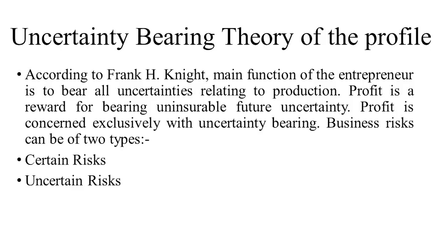The next theory is the Uncertainty Bearing Theory of Profit, propounded by Frank H. Knight. According to Knight, the main function of an entrepreneur is to bear all uncertainties related to production. Profit is a reward for bearing uninsurable future uncertainties. Business risk can be of two types: certain risk and uncertain risk.